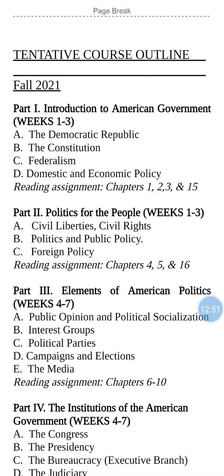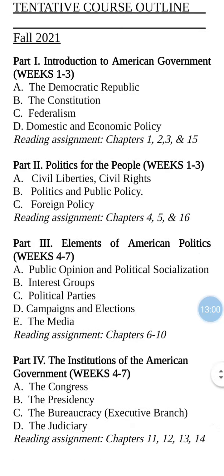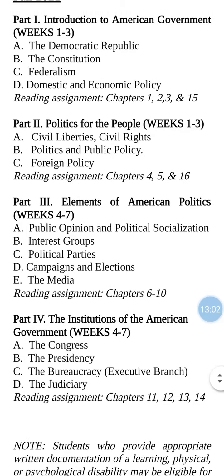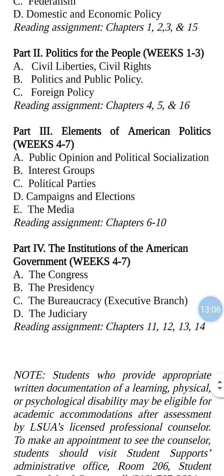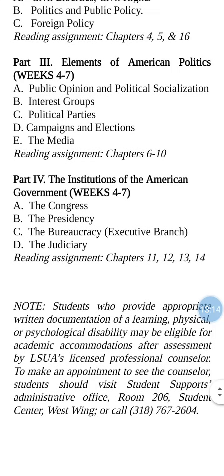The tentative outline is as follows: weeks one through three, we'll be going over parts one and two. The last four weeks of class, we'll be going over parts three and four — elements of American politics and the institutions of American government. So read over that, study it, learn it, learn to love it.